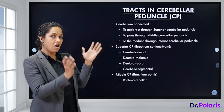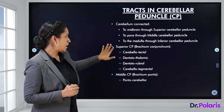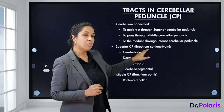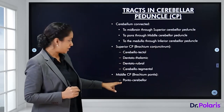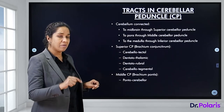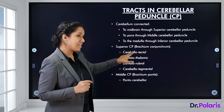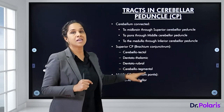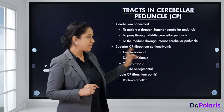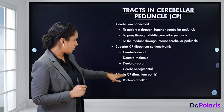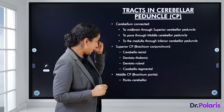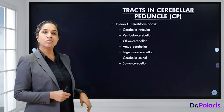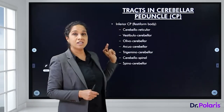The superior cerebellar peduncle, also called the brachium conjunctivum, carries tracts including the cerebellotectal, dentatothalamic, dentatorubral, and cerebellotegmental tracts. Through the middle cerebellar peduncle, called the brachium pontis, the pontocerebellar tract enters the cerebellum.